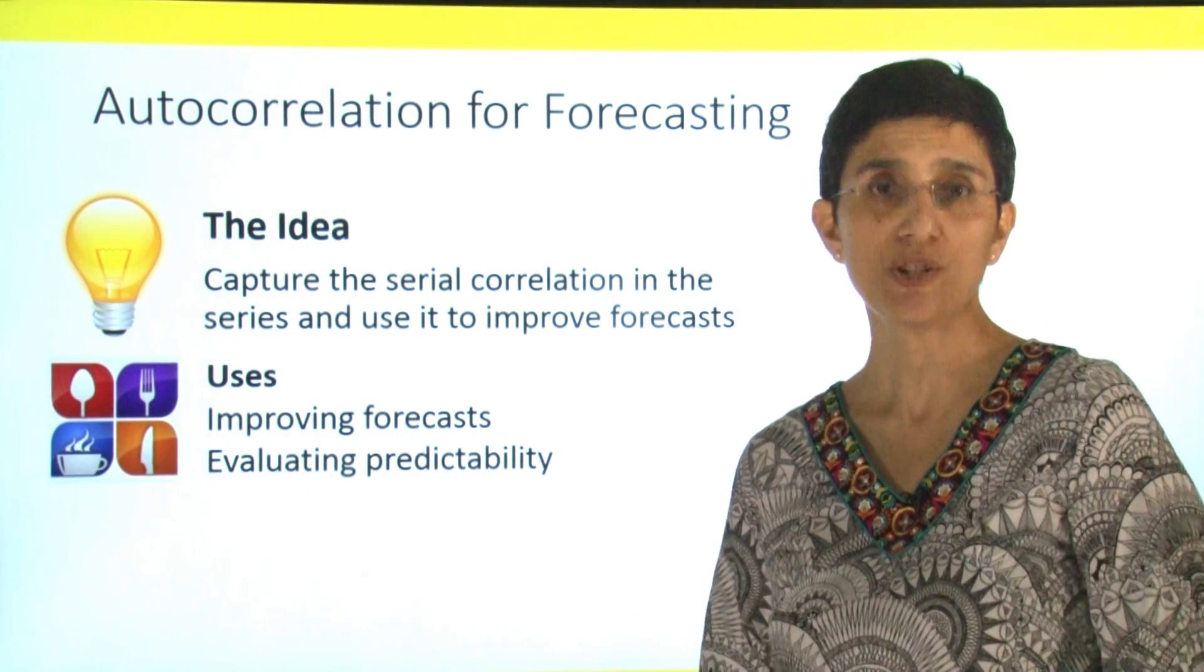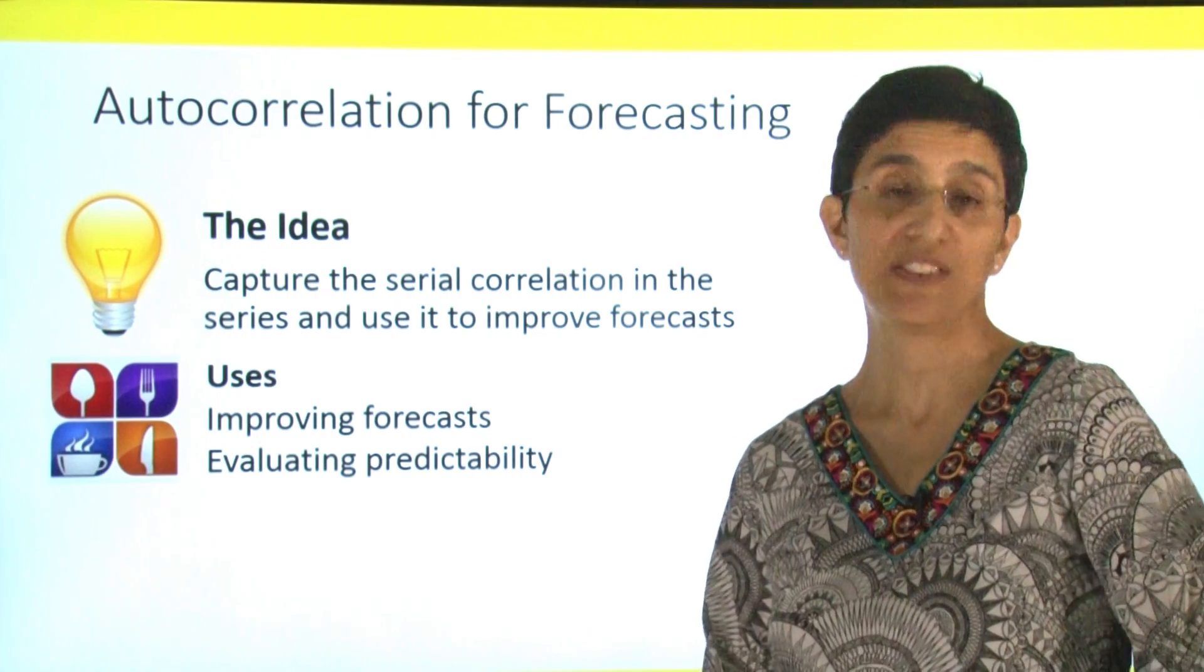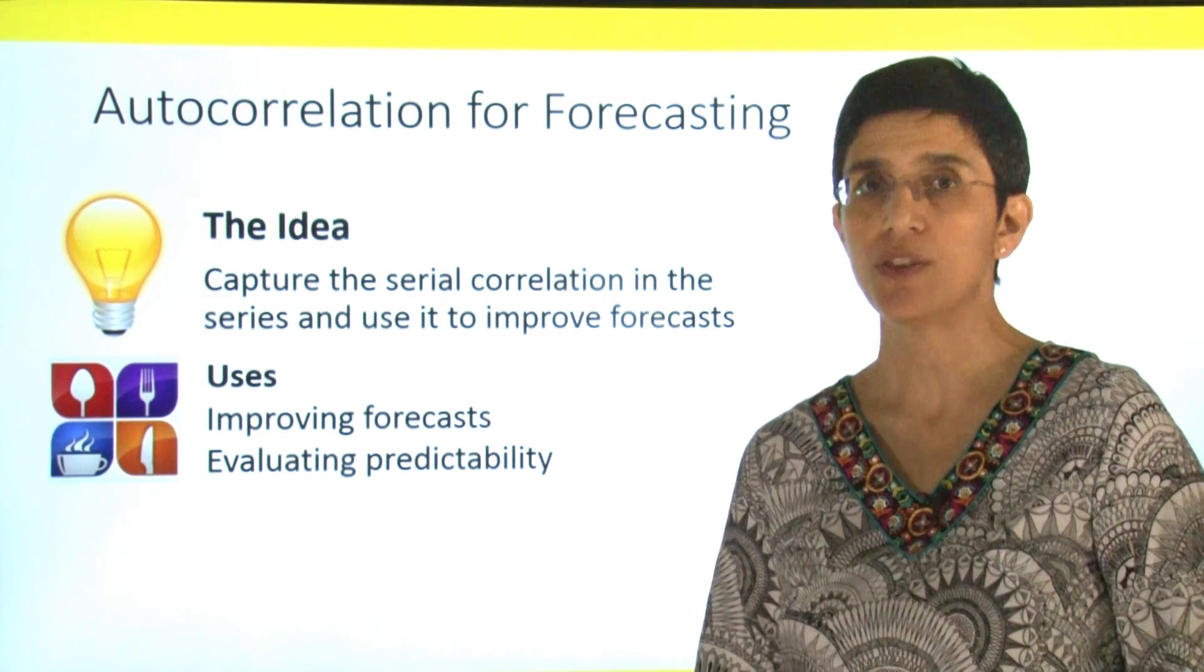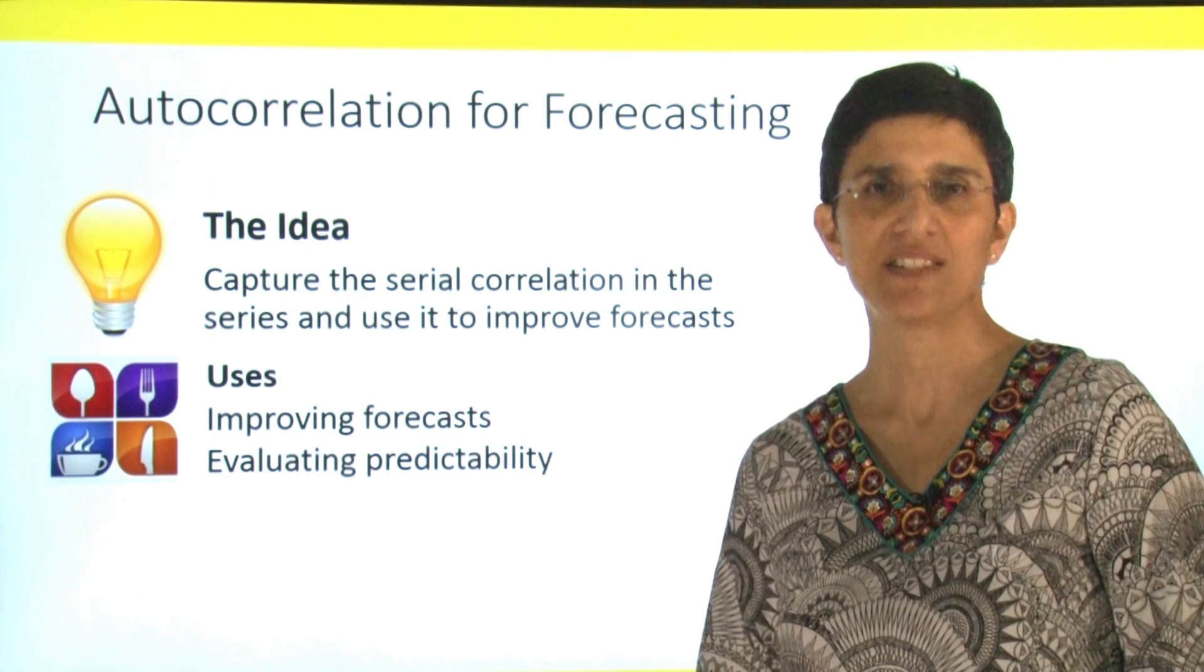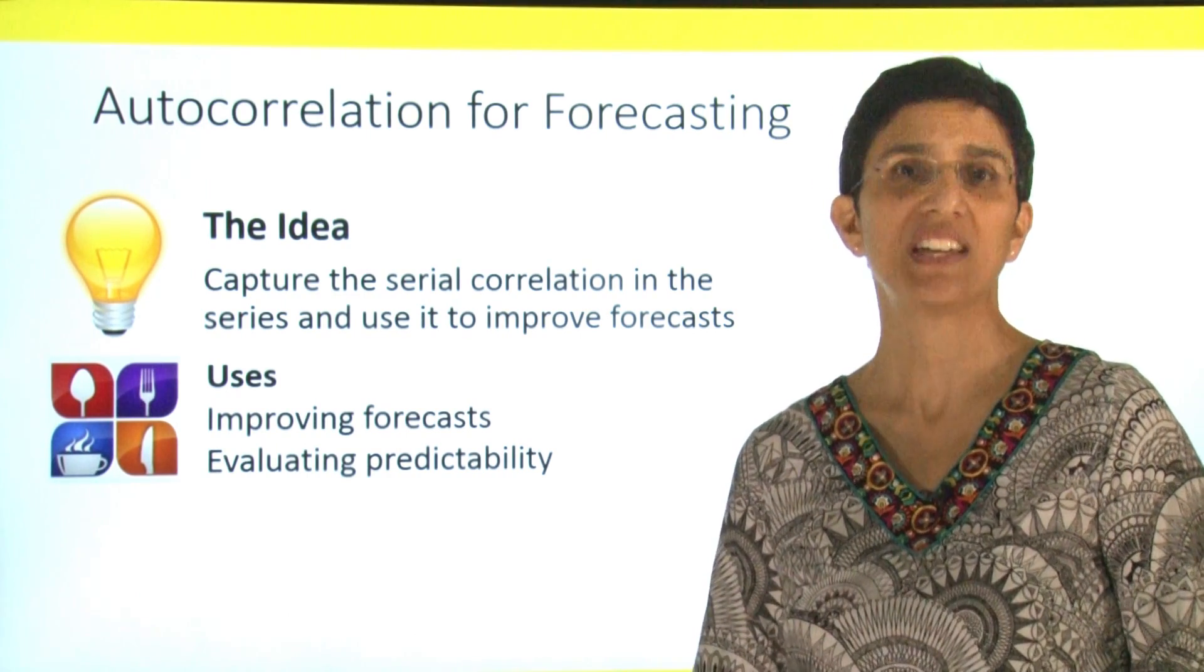If we draw the autocorrelation plot for a series and find that there's no autocorrelation, it means that there's no information there, and that we cannot forecast this series beyond a naive forecast.